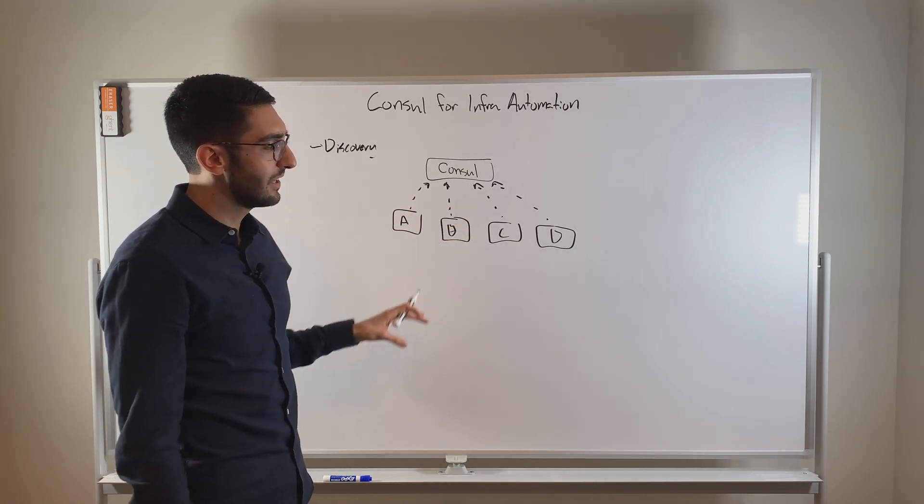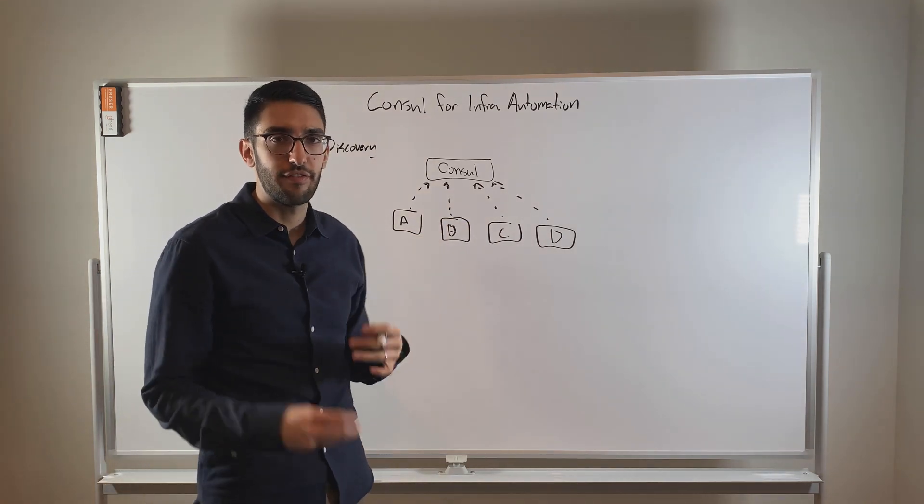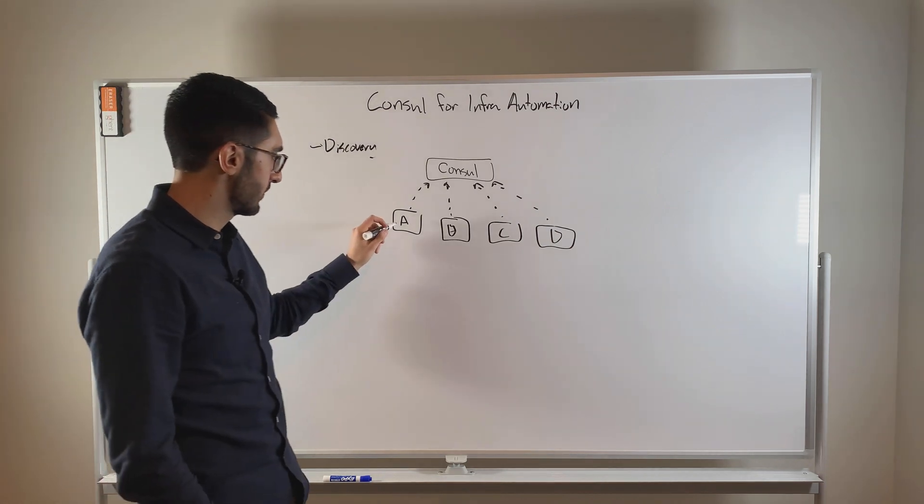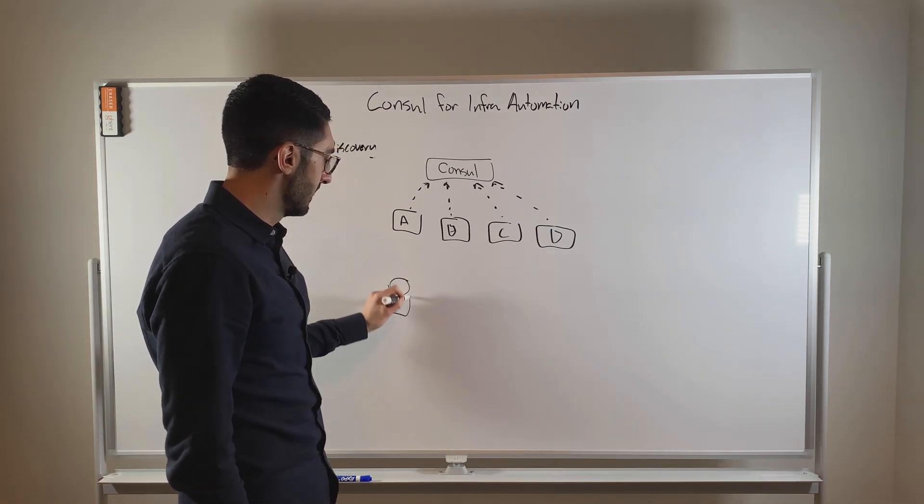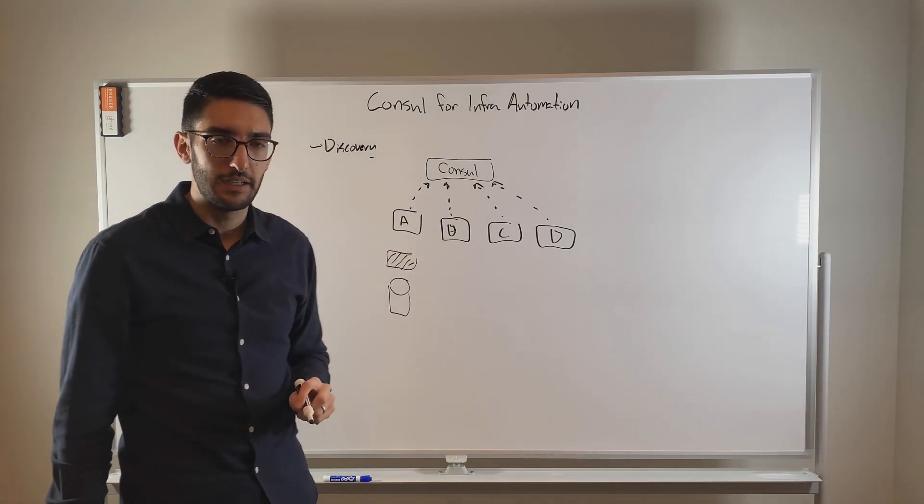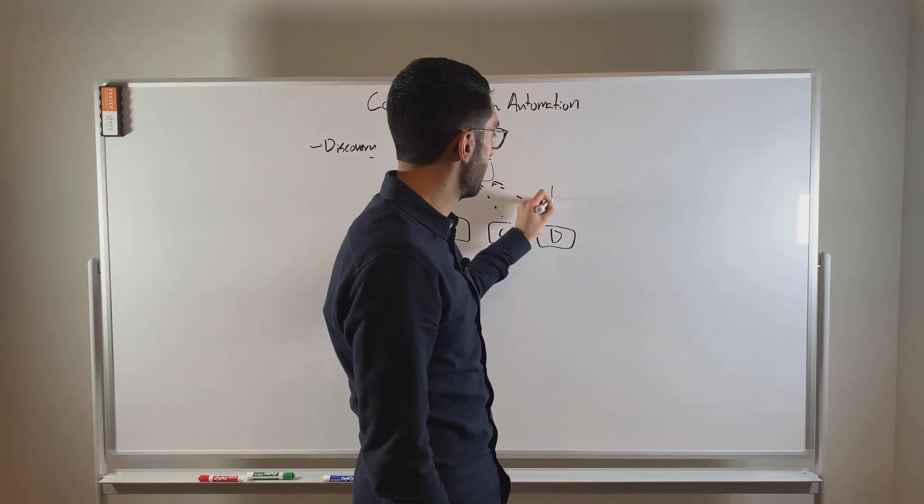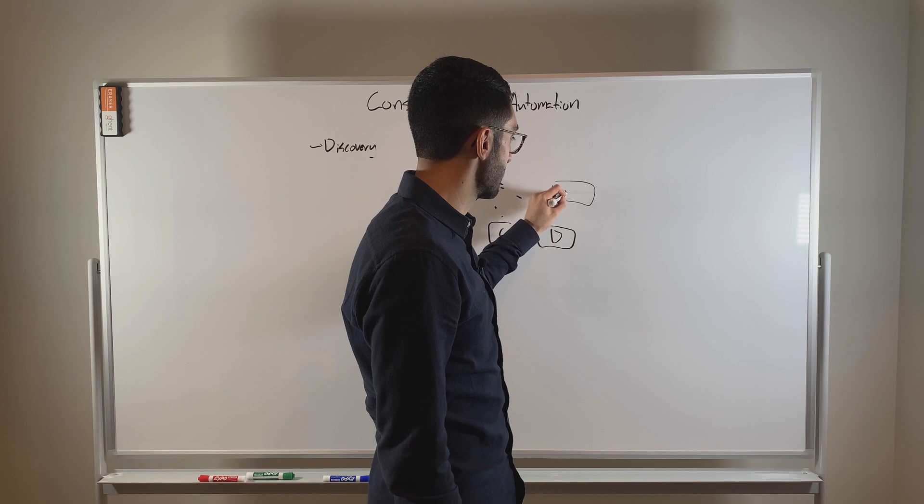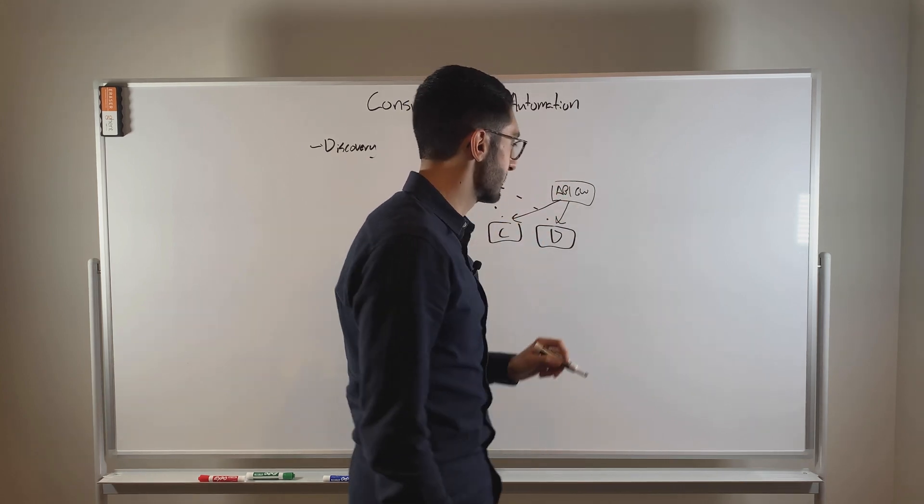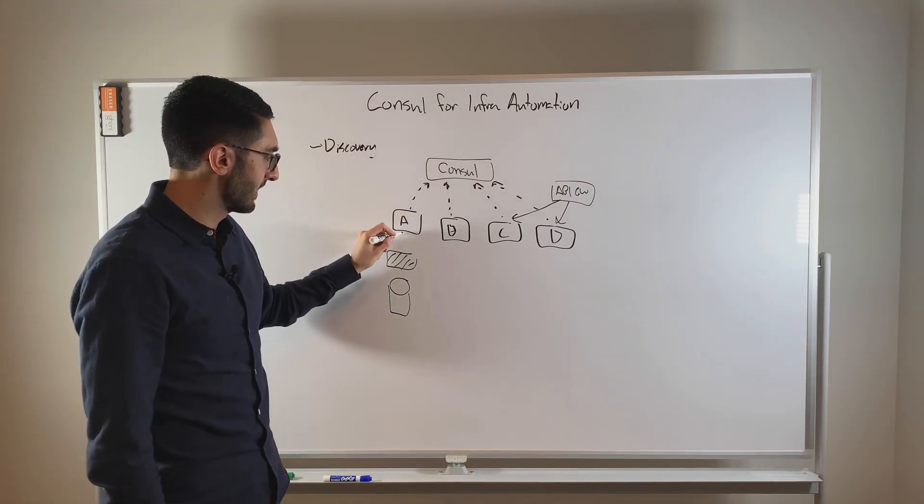Now, I think the reality is in most networks, it's not so simple as independent applications just on a flat network talking to one another. In practice, you have different middleware that exists between them. For example, if A wants to go talk to a database, that database might have a firewall that sits behind it. Or we might have traffic that needs to come in from the public internet, and we have an API gateway as an example. And that API gateway is sending traffic to services C and D.